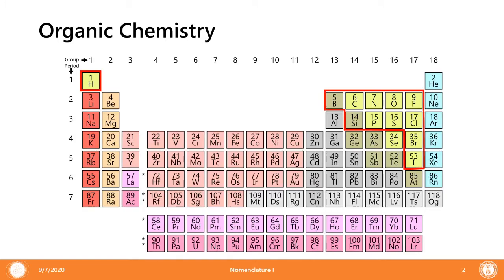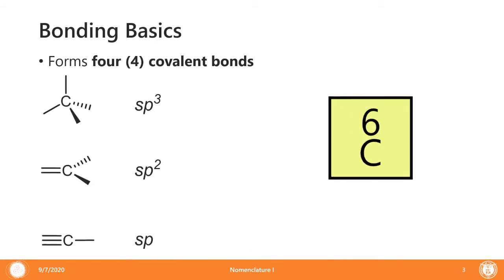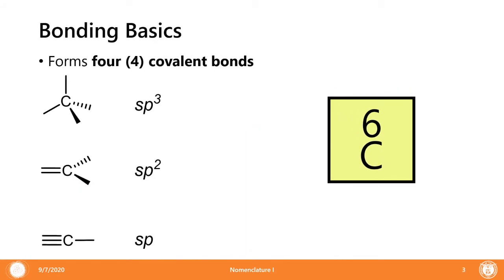Organic chemistry deals with the non-metallic elements of the periodic table. In particular, we'll be talking about carbon and hydrogen. Let's recall from general chemistry that carbon forms four covalent bonds. It may also form double bonds and triple bonds, as well as exhibit hybridization, particularly sp3, sp2, and sp.